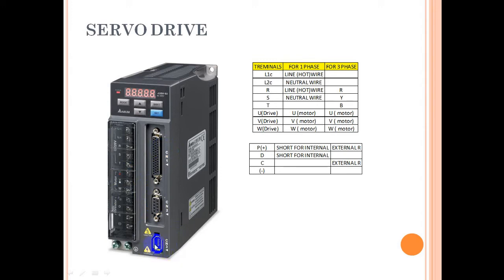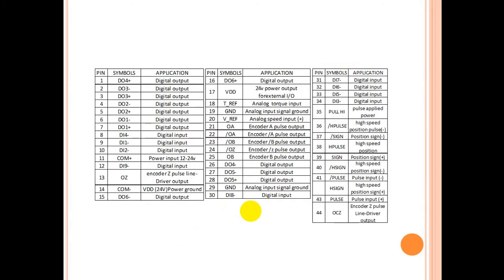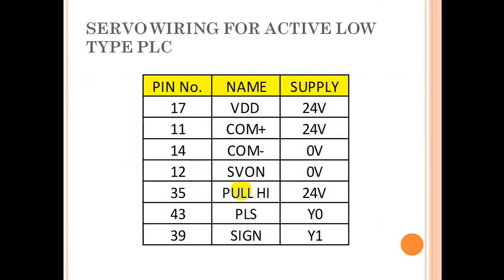Now let's discuss CN1. We also have CN3, but that's not covered in this video. We'll discuss it later. CN1 has 44 pins, and we don't require all these pins at a time, but we require a few pins. Before that, we need to discuss what type of PLC you have.